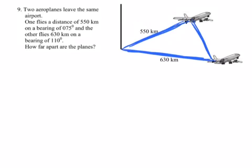We were, however, given the bearing of both of the planes. We should remember that bearings are always measured clockwise from north. So the first plane had a bearing of 075 degrees, which would be this one here.